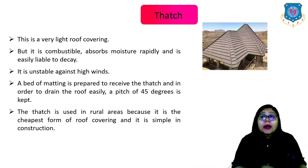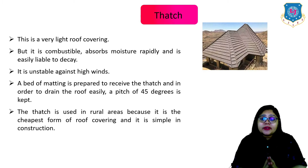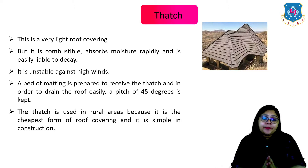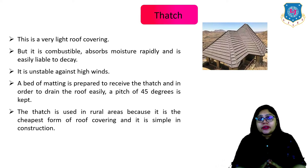First one is thatch. This is a very light roof covering but it is combustible, absorbs moisture rapidly, and is easily liable to decay. It is unstable against high winds. A bed of matting is prepared to receive the thatch and in order to drain the roof easily, a pitch of 45 degrees is kept. Thatch is usually used in rural areas because it is the cheapest form of roof covering and simple in construction.